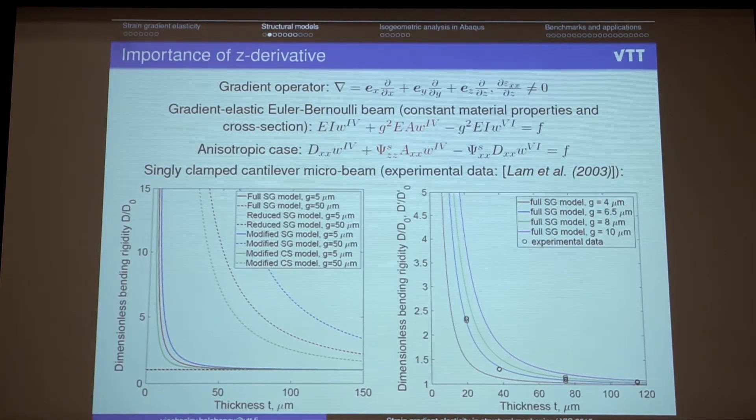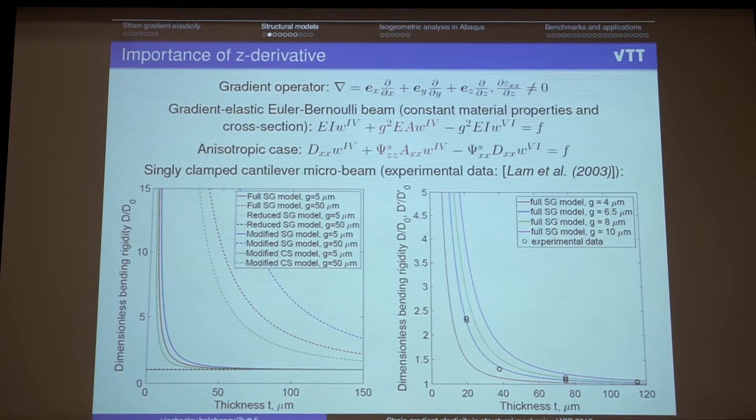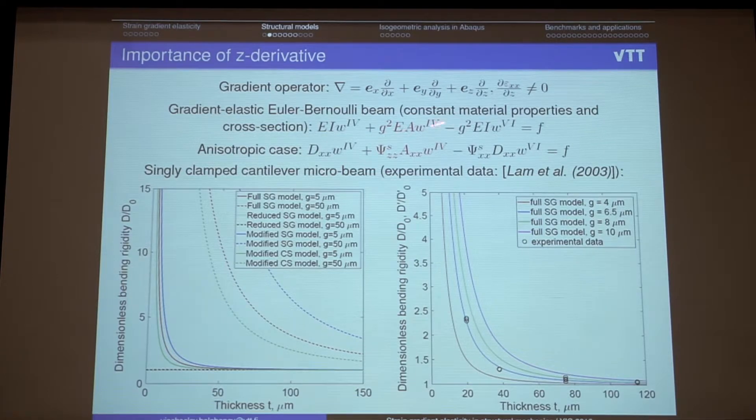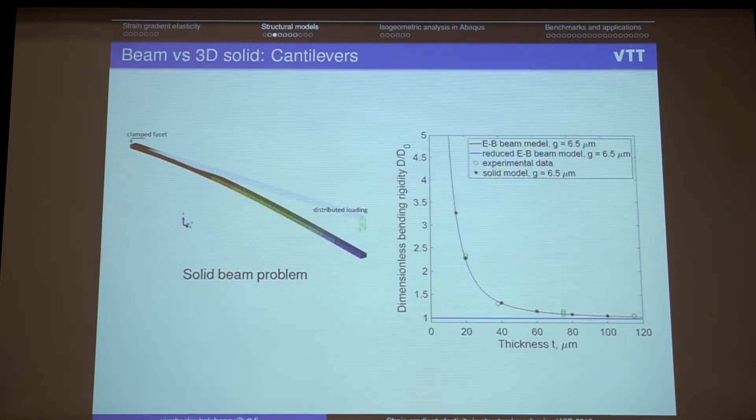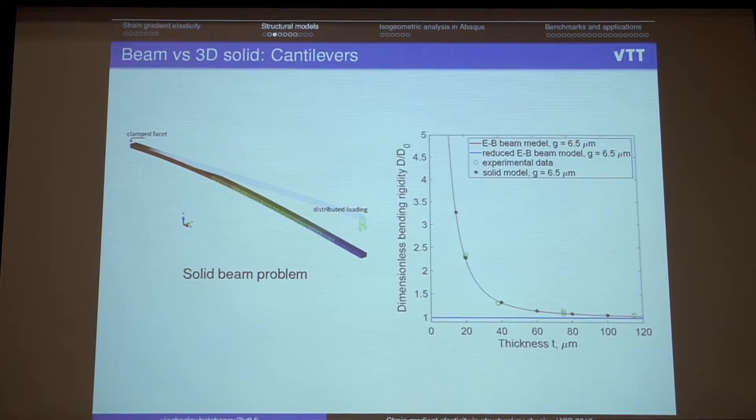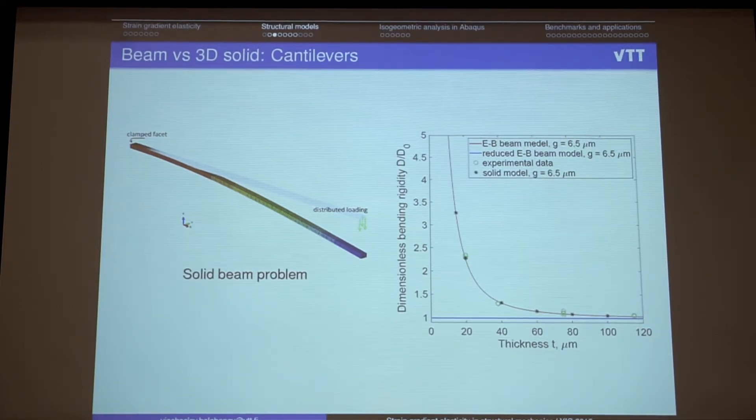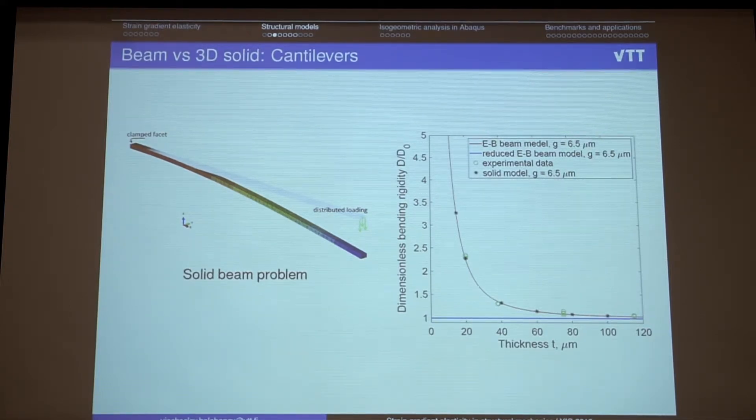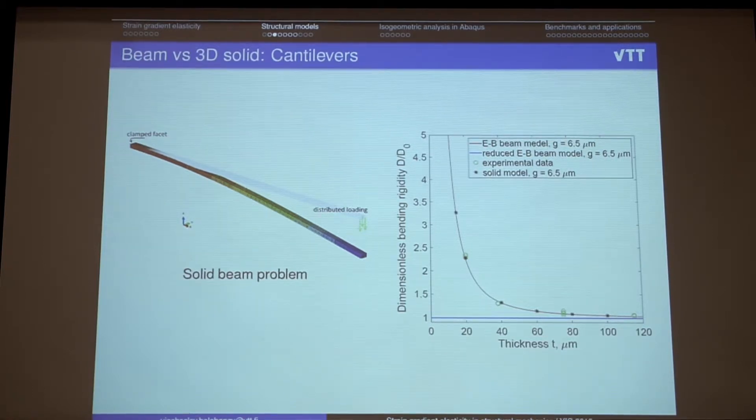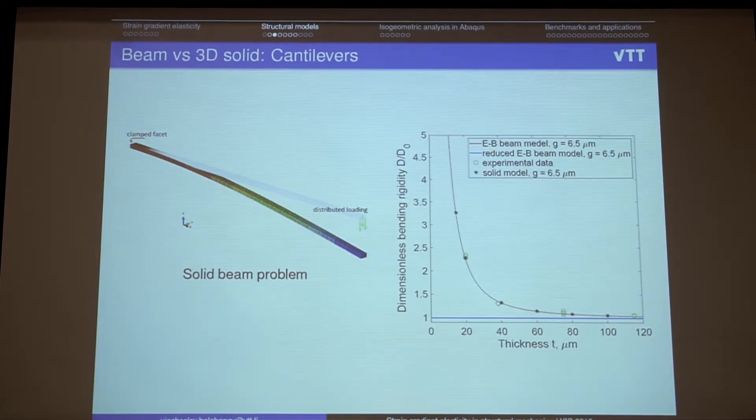And I also have a lot of disputes with researchers about this term. And the very simple way to check why do we need to include it also is to solve the problem with full 3D fine scale model. And we see the same effect for the 3D model where we don't have any structural simplifications. So if we take into account all the parts of the model, we have good results.